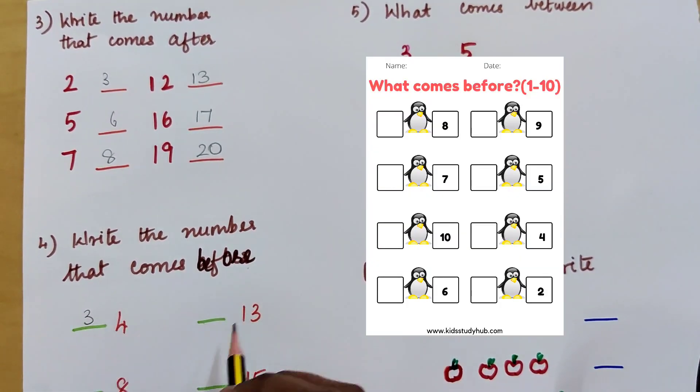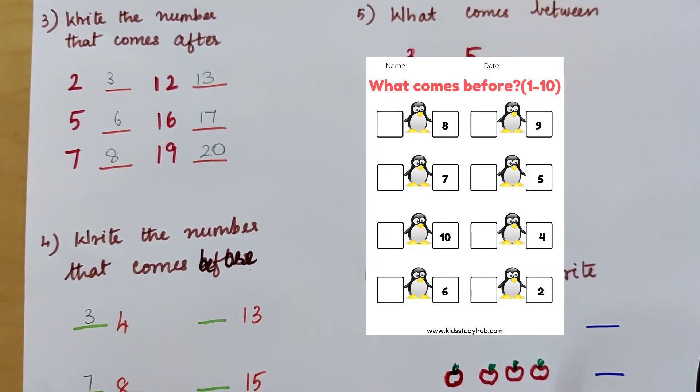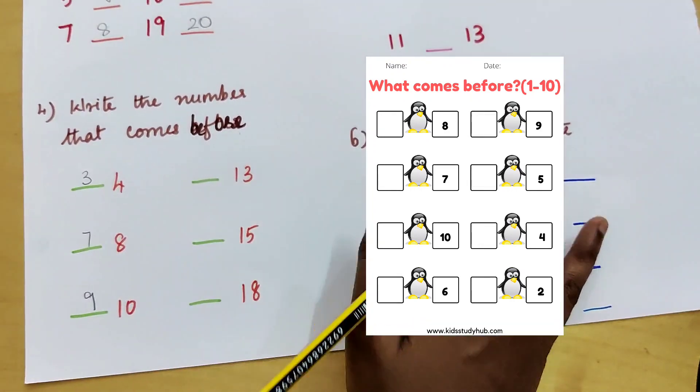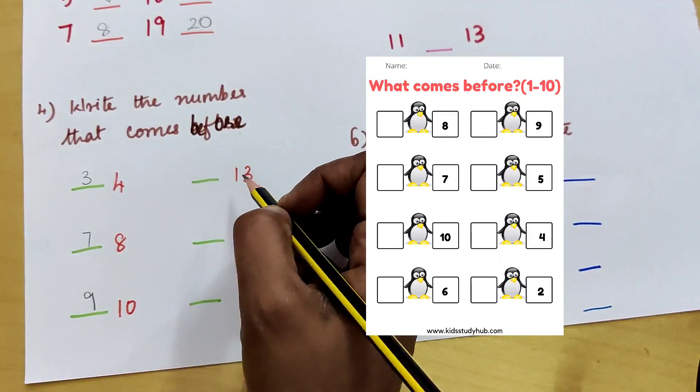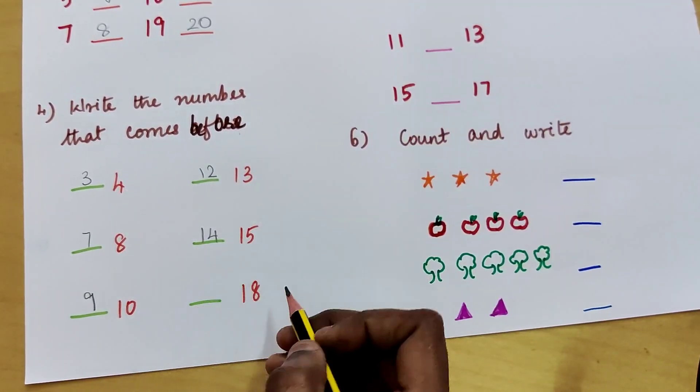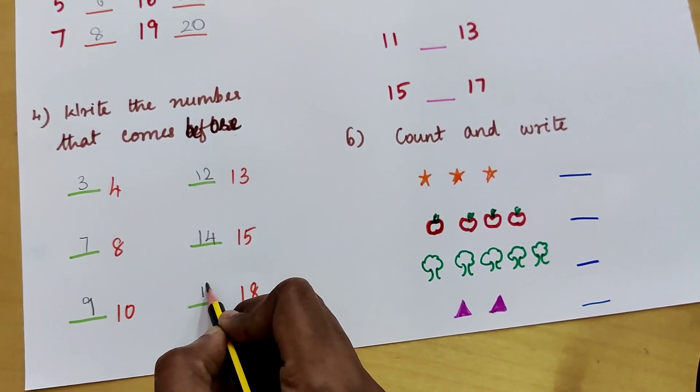Then what comes before. 4 before 3, 8 before 7, 10 before 9, 13 before 12, 15 before 14, 18 before 17.